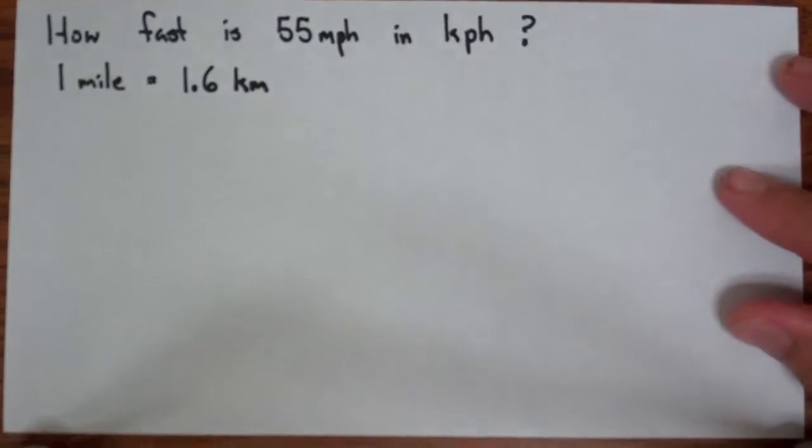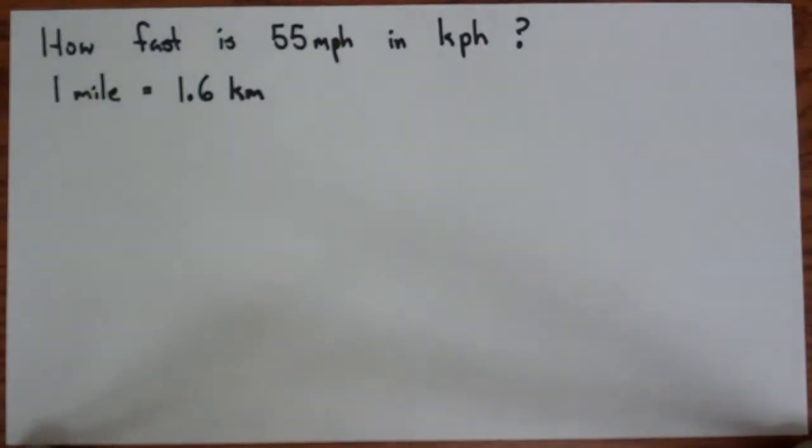Now maybe another thing that you would be doing is driving to Canada or maybe you're driving to Mexico. We live in Florida. You're going to go across the border, and so you're looking at your speedometer, and you're wondering, if I'm doing 55 miles per hour, all of the speed limit signs in Canada and Mexico are in kilometers per hour, so how fast is 55 miles per hour in kilometers per hour?